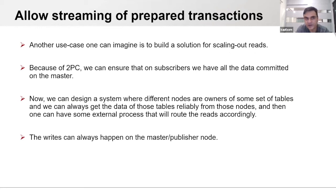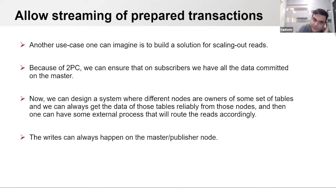Another use case with two-phase commit is to build a solution for scaling out reads. Because of 2PC we can ensure that subscribers have all data committed on the master. This means one can design a system where different nodes are owners of some set of tables, and we can reliably get the data of those tables from different nodes. An external process can route reads accordingly, while writes always happen on the master or publisher node.